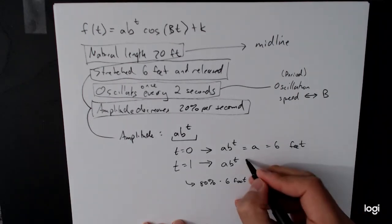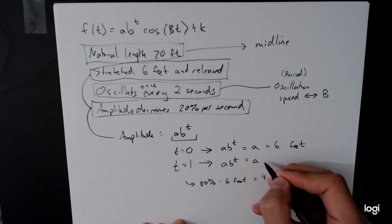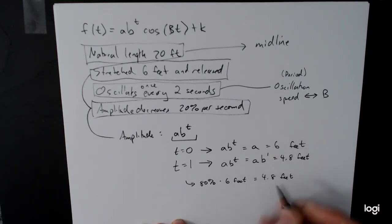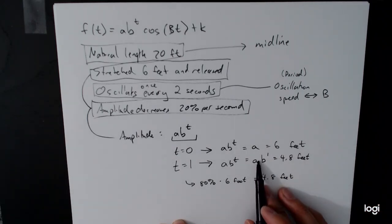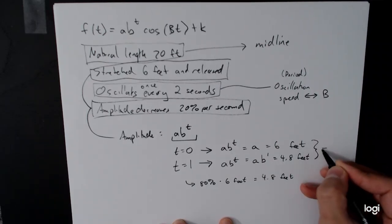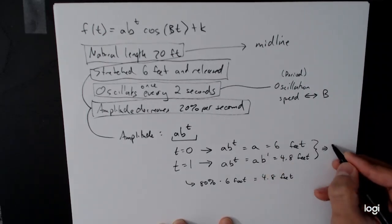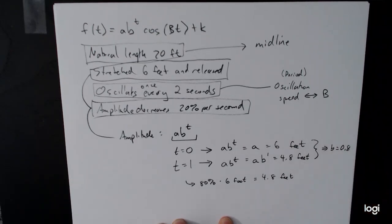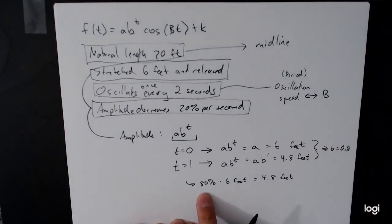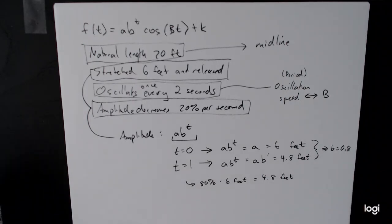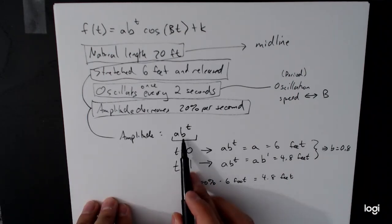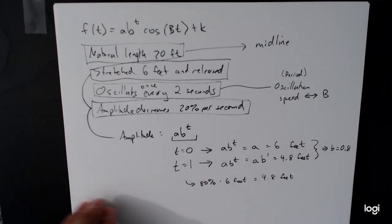And so a, excuse me, a, b to the first power is equal to 4.8 feet. And since we know what a is equal to, we could actually plug this in and solve for b. b to the first here is just b. So as it turns out, b is equal to 0.8. And that 0.8 is the same as the 80% here. And so that's the short way of doing it once you recognize that that's how it works. But 20% per second corresponds to b equal to 0.8.